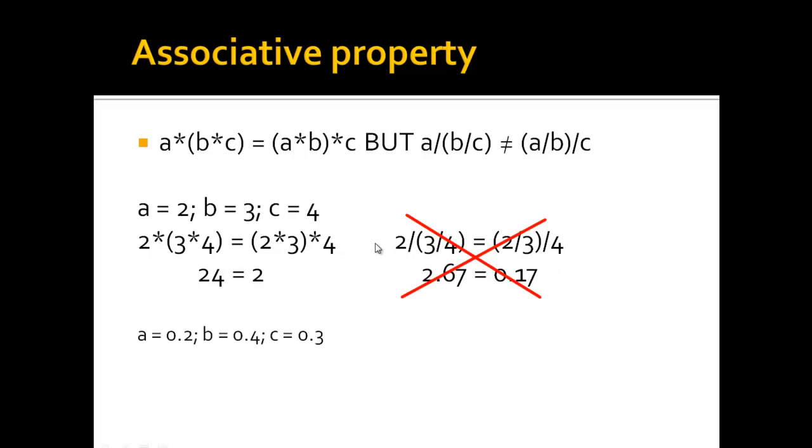Then, the same is true for decimal numbers, so I here just give you another example that you can go through yourself. And you see here again, when you use decimal numbers for a, b, and c, you will also have the same result when you change the brackets for multiplications, but not for divisions.